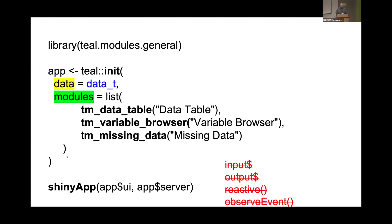Here's how it looks. In just these lines of code, I'll demonstrate that you could have this dashboard. I load TIL and the other dependency packages, use the function init, dump in my dataset, and list the modules I want to use — those are the tabs we've just seen. These modules don't even need specific parameters other than a name. By default they take all of the datasets in the data_T object. I don't need to use input and output dollar signs, I don't need to worry about reactive or observe events — these are all built in, in seamless integration under the TIL framework.